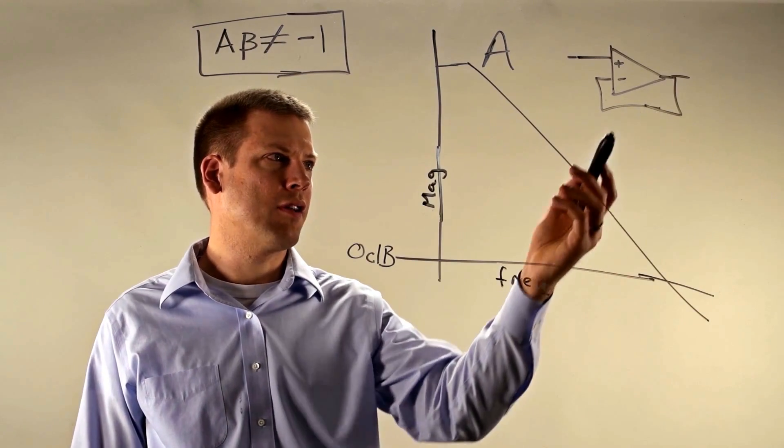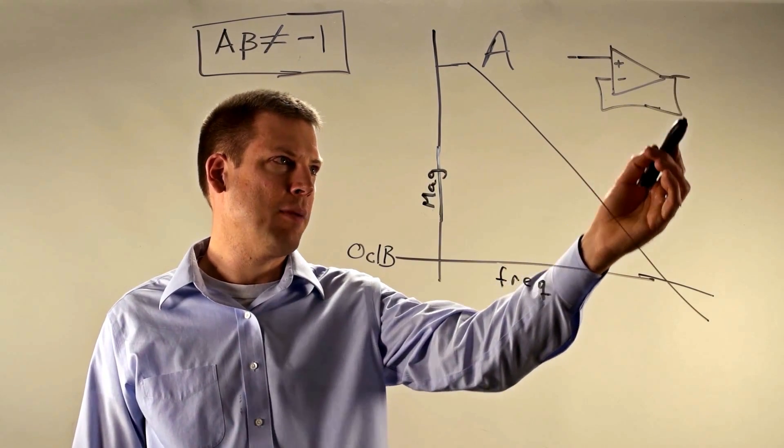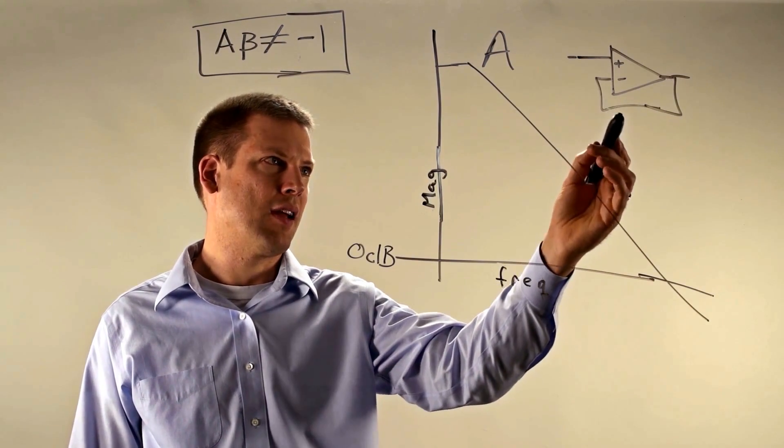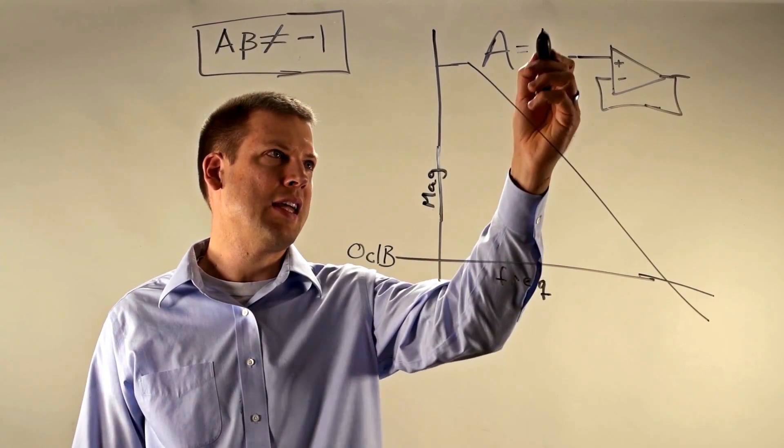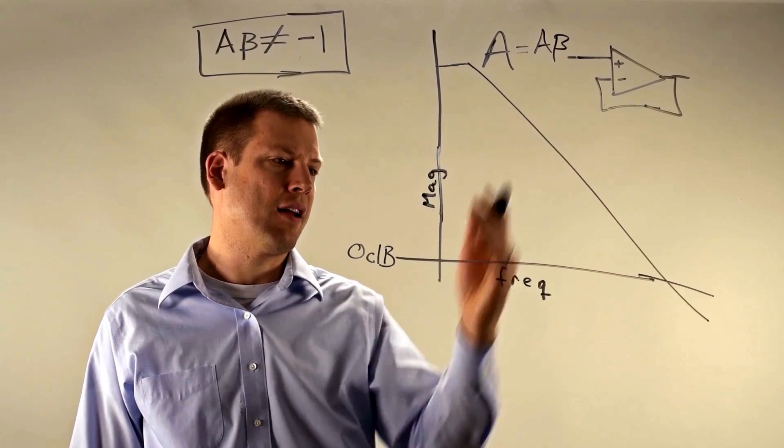And when we have a voltage follower configuration you can see the feedback is just 1, there's no division or anything, it's just 1. And so our open loop gain of our op amp equals our loop gain of the circuit.